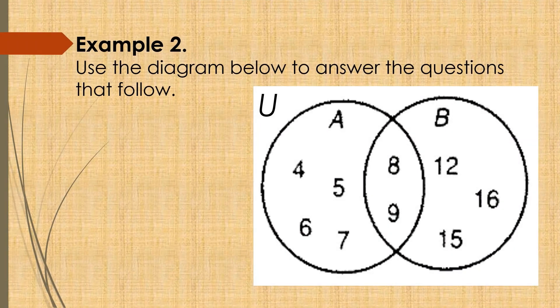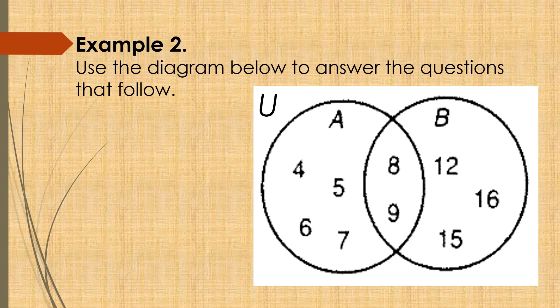Let us have example number 2. Use the diagram below to answer the questions that follow. Inside this universal set, we have two sets, set A and B. So, what are the elements of A? The elements of A are 4, 5, 6, 7, 8, and 9. While set B have elements 8, 9, 12, 15, and 16.